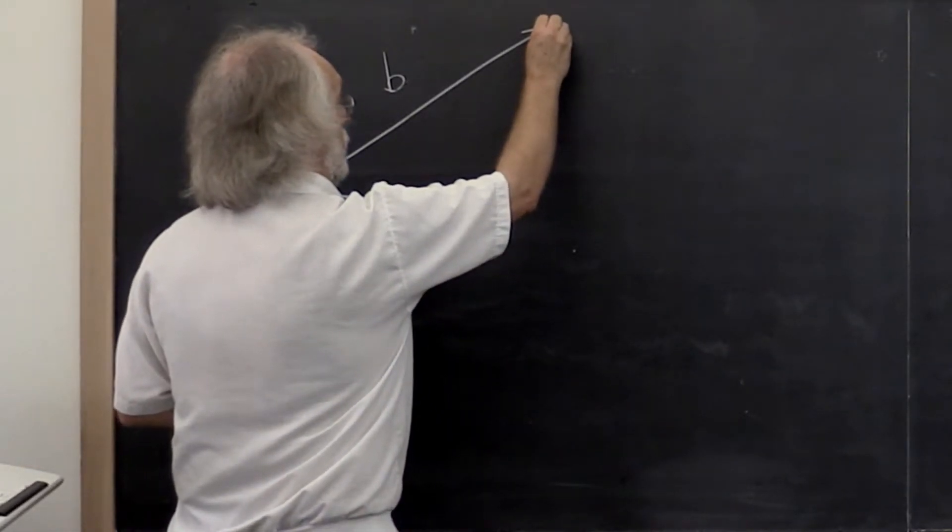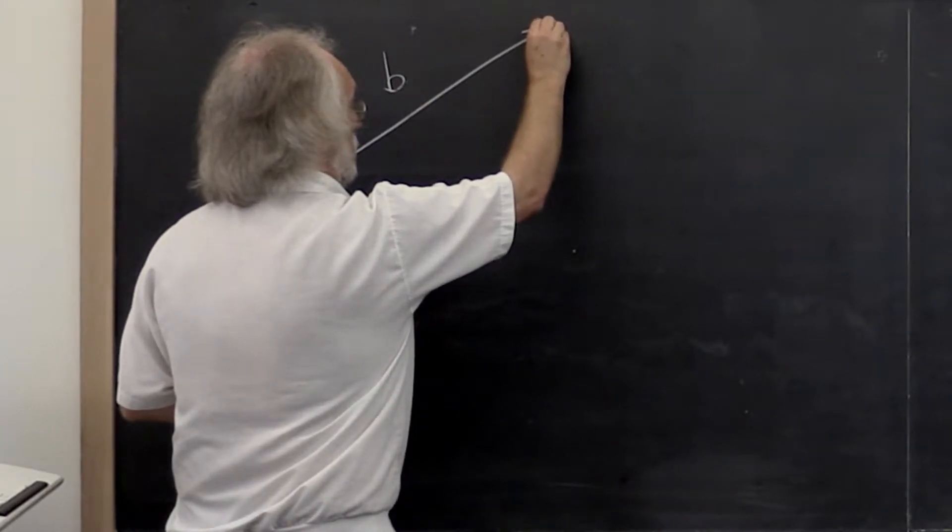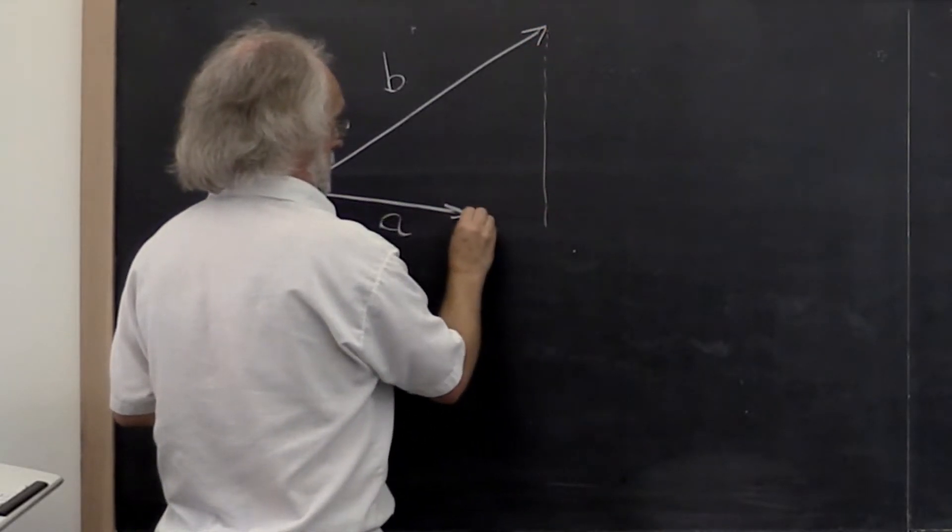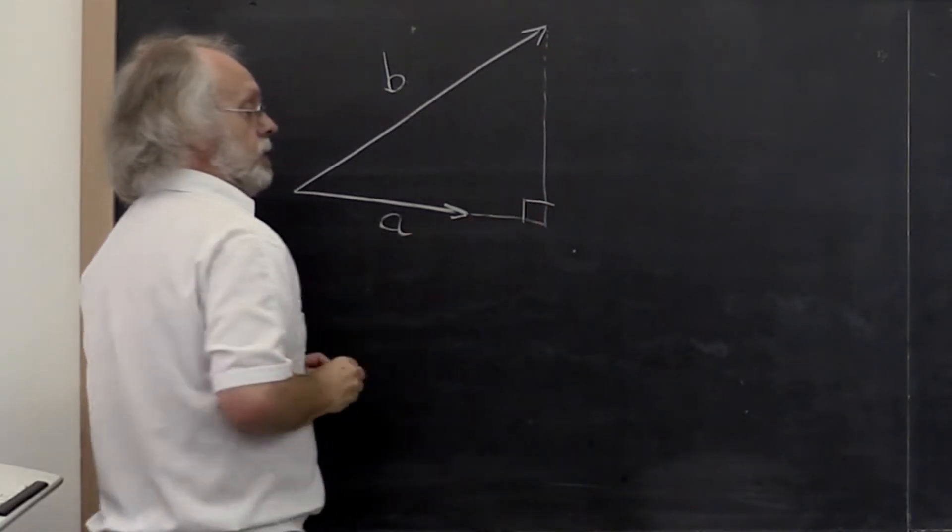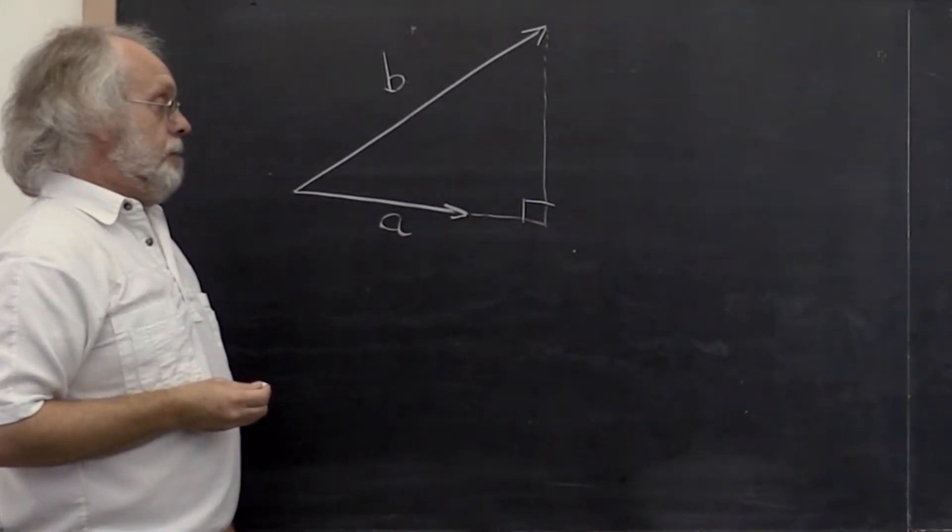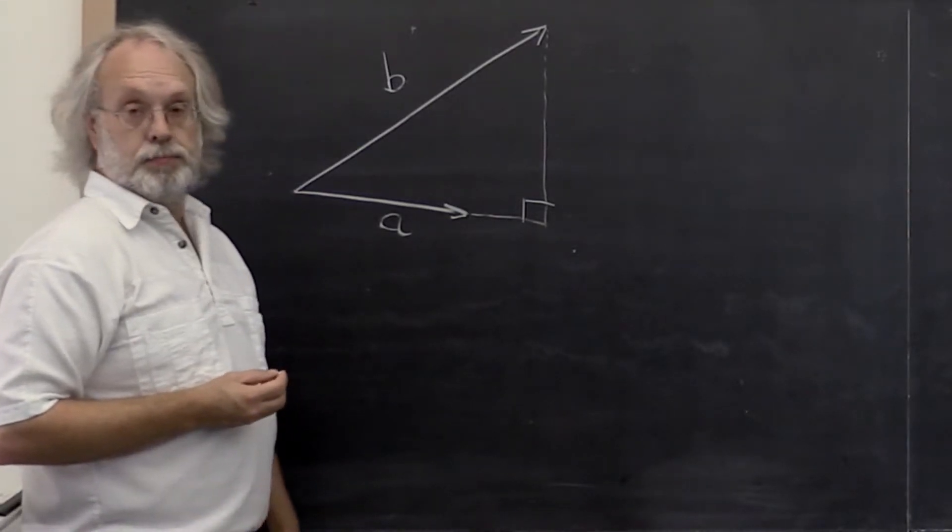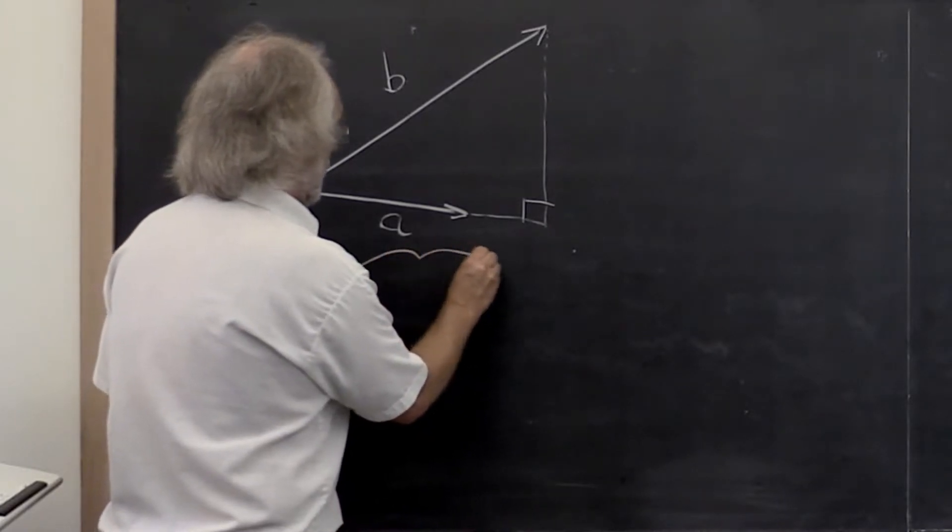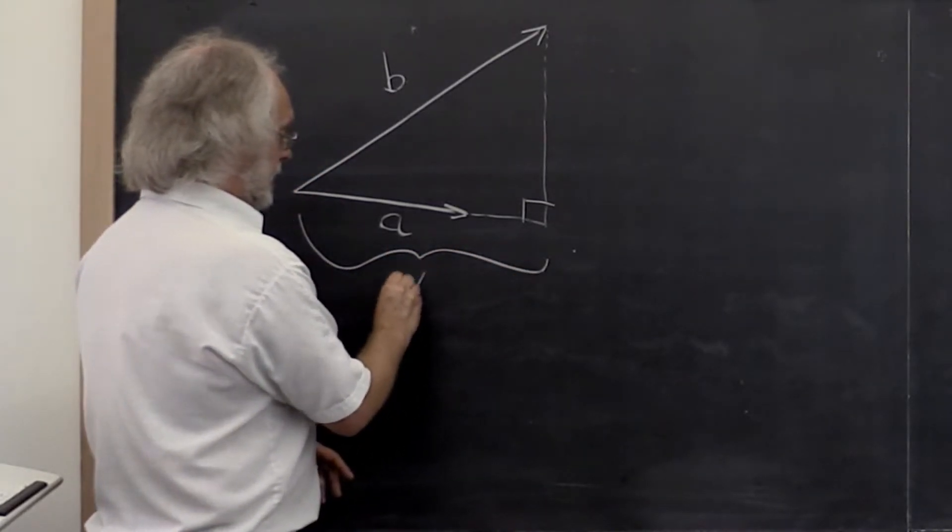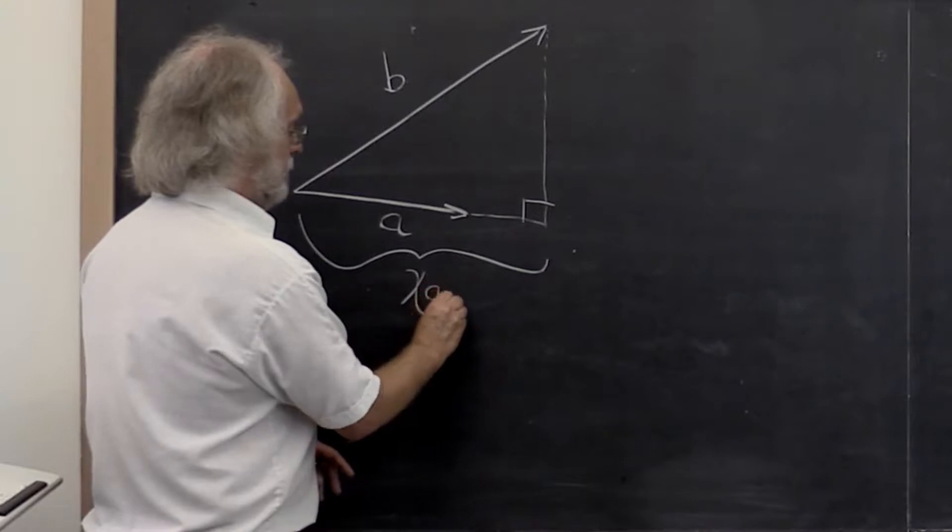That component we can picture with this triangle right here, where this is a right triangle. And what we can do is we can say, well, we don't know what it is, but let's say that this is chi times the vector A.